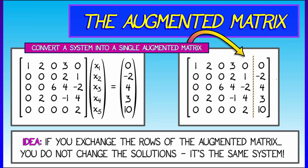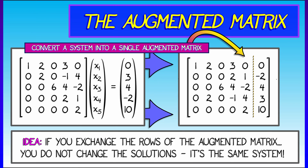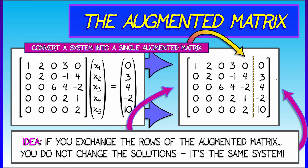The big idea is that we can do things to this augmented matrix that don't change the set of solutions to the original system Ax equals b. For example, if we switch two rows in the augmented matrix, that corresponds to just writing the equations in a different order — that doesn't change anything. But look at what has happened to that augmented matrix: it is now upper triangular, which is going to be very helpful to us.